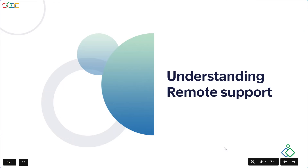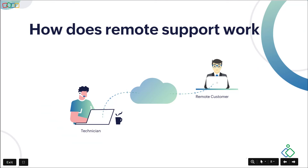Here's the architecture behind how remote support works in Zoho Assist. The technician clicks the Start Now button, which generates a nine-digit session ID code. The technician provides this code to the remote customer, who enters it at join.zoho.com. Once the customer joins, their screen is automatically replicated at the technician's side and the technician has full access and control. That's the simple architecture behind remote support in Zoho Assist.